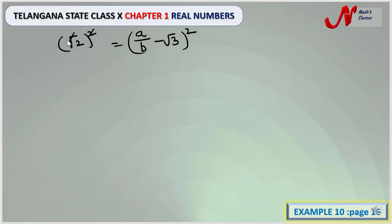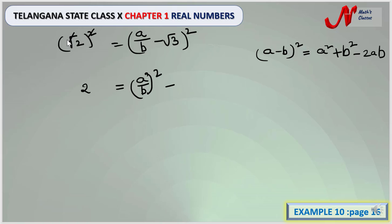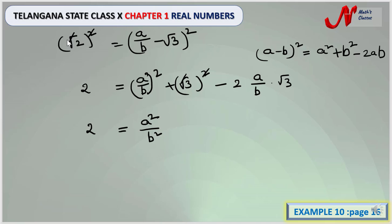In the LHS, we can cancel the root and square. In the RHS, (a/b − √3) is in the form of (a − b)², which can be written as a² + b² − 2ab. Using this formula, we expand the RHS, so the equation becomes 2 = (a/b)² + (√3)² − 2·(a/b)·√3. Simplifying, this gives 2 = a²/b² + 3 − (2a/b)√3.